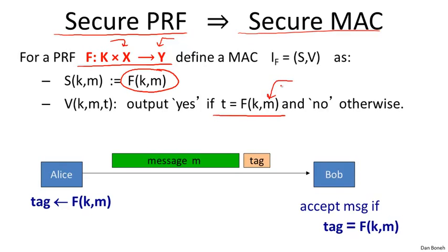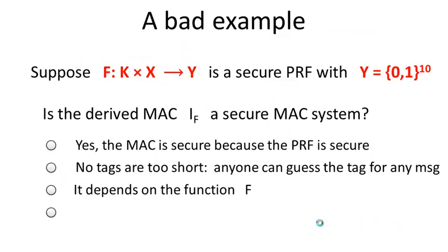The way we verify a message-tag pair is by recomputing the value of the function at message M and checking whether that's equal to the tag given to us — we say yes if so, and reject otherwise. So when Alice wants to send a message to Bob, she computes a tag by evaluating the PRF and appends this tag to the message. Bob receives the message-tag pair, recomputes the value of the function, and tests whether the given tag equals the value of the function at point M.